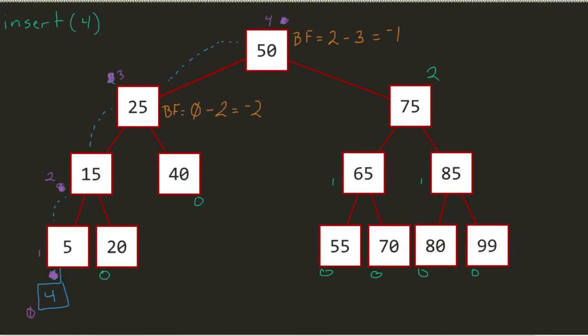So one of the things that we can do if I have found myself in a very heavy balance, I have a negative 2 here on my 25 node, what I can do is something we call a rotation.